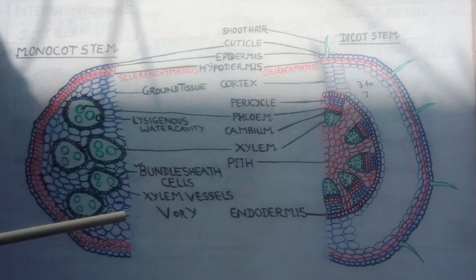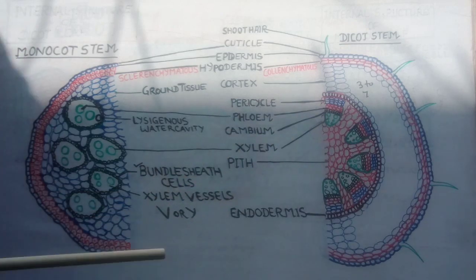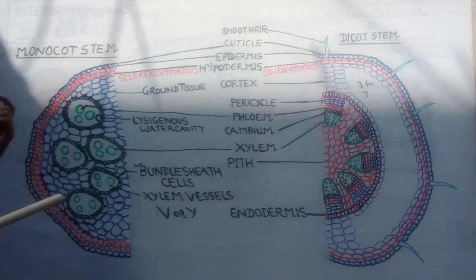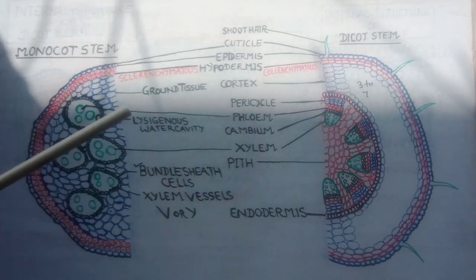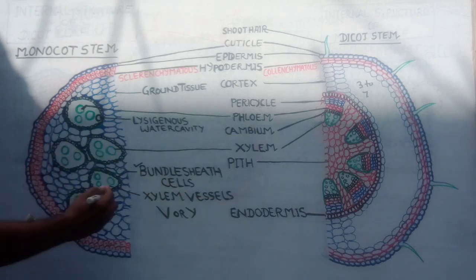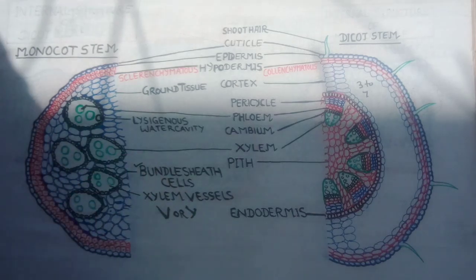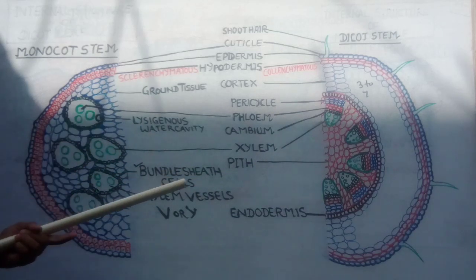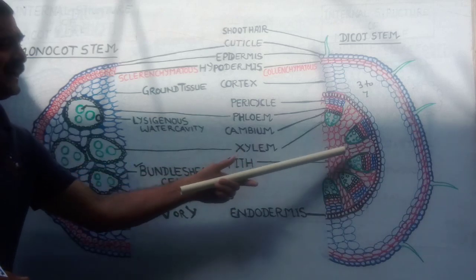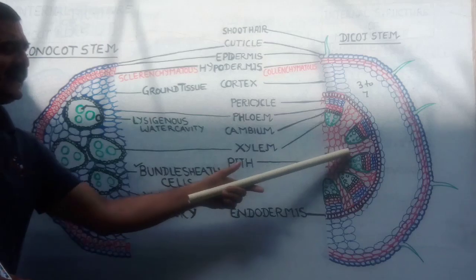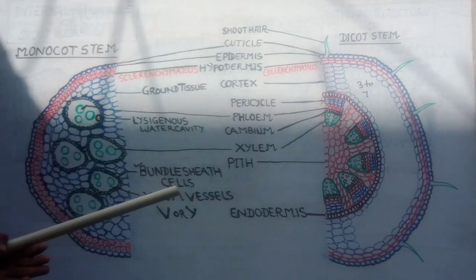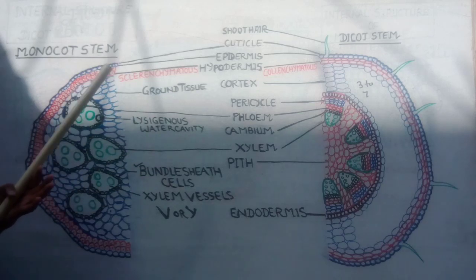In monocot: bundle sheath cells present. In monocot: phloem parenchyma is absent. In case of the monocot stem, phloem parenchyma is absent; in case of the dicot, phloem parenchyma is present. The xylem vessels in monocot are V- or Y-shaped, but in case of dicot the xylem vessels are radial. In between the vascular bundles in dicot there are radial parenchymatous medullary rays which carry out radial conduction of food.